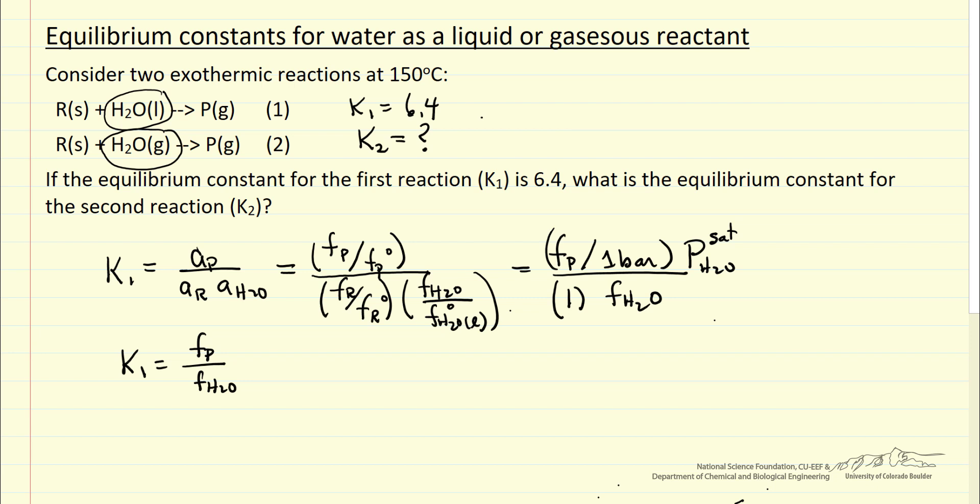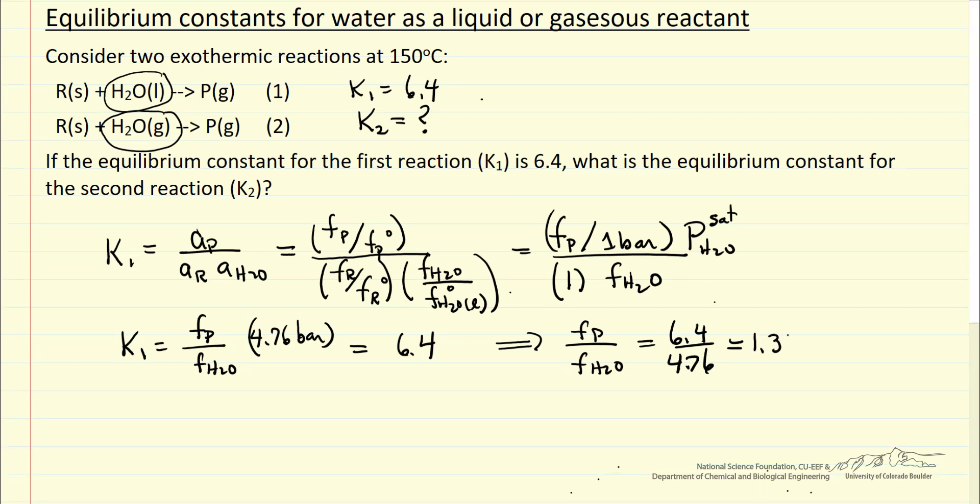I can look up the saturation pressure of water at 150 degrees C, it's 4.76 bar. And so this is equal to 6.4, which means that fugacity of P over fugacity of water is 6.4 over 4.76, and so that's equal to 1.34.